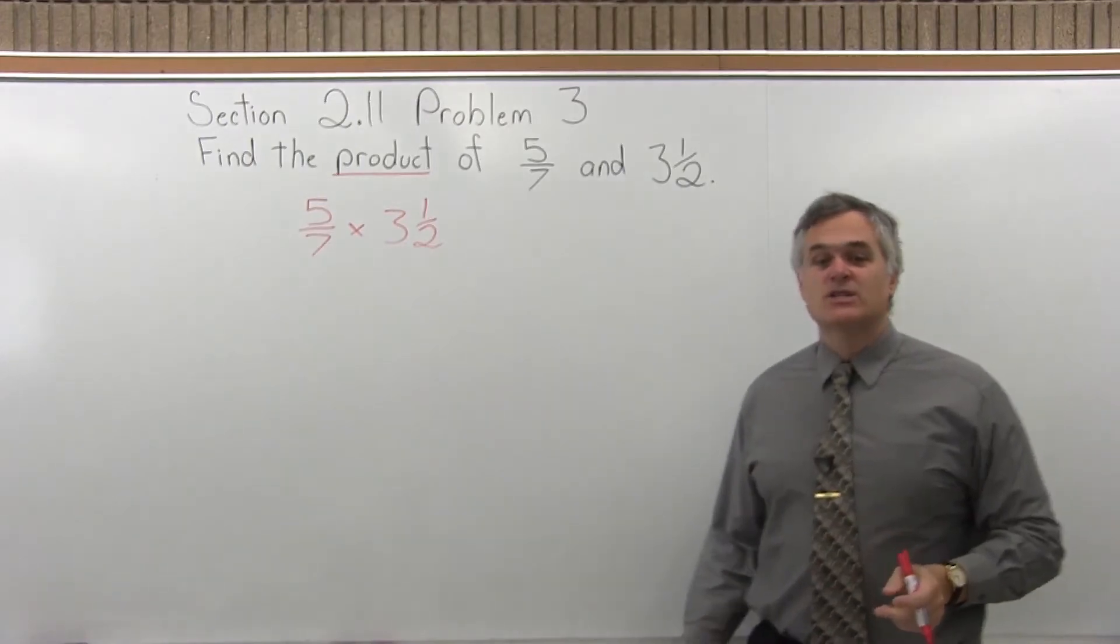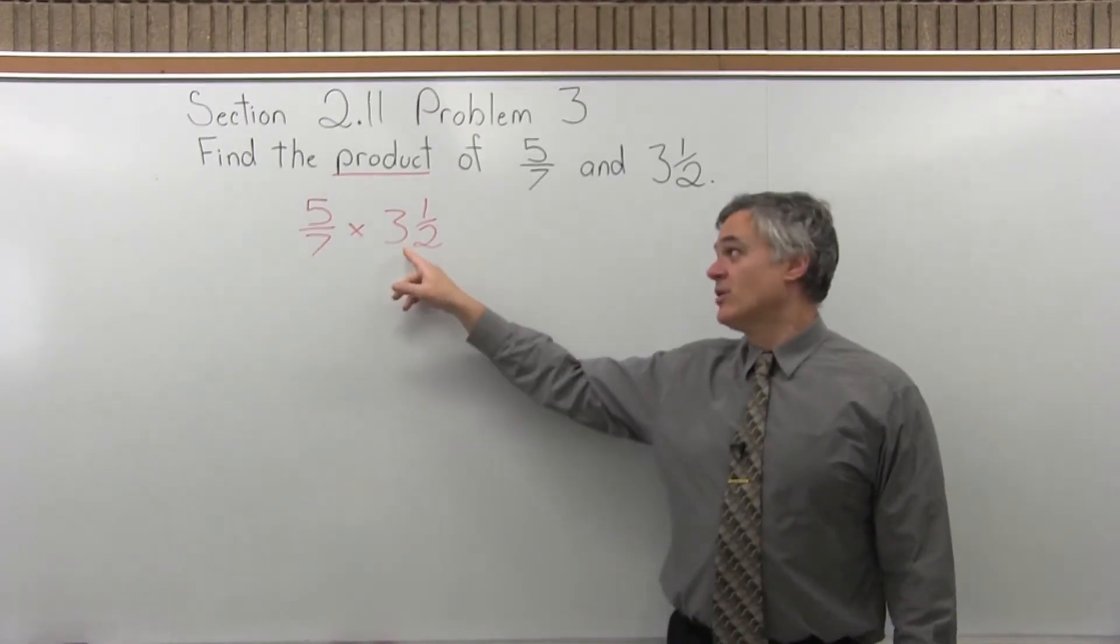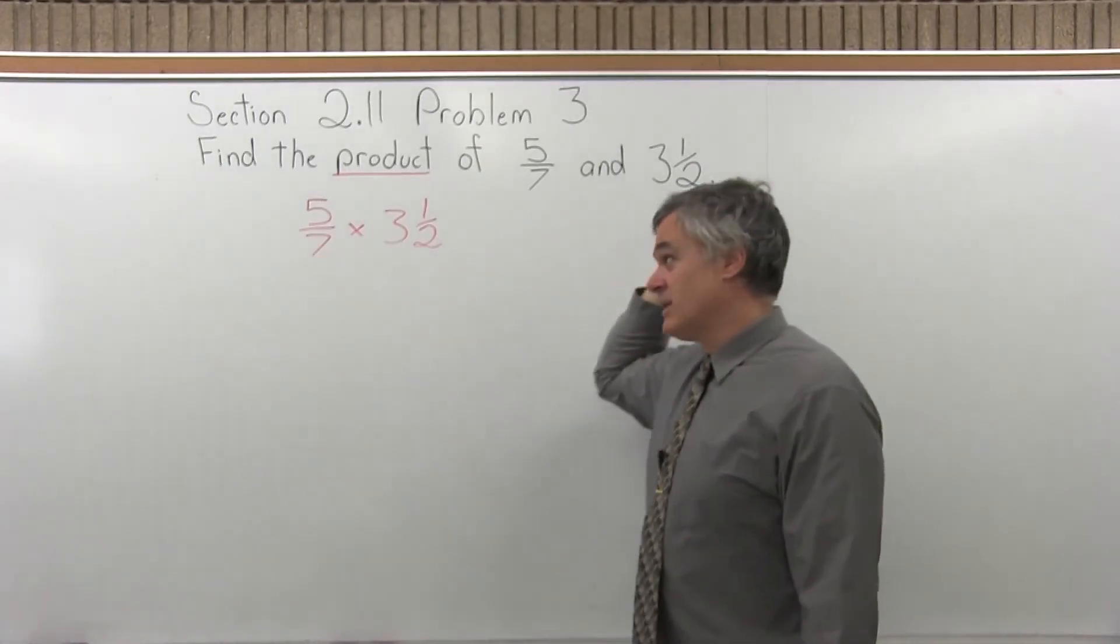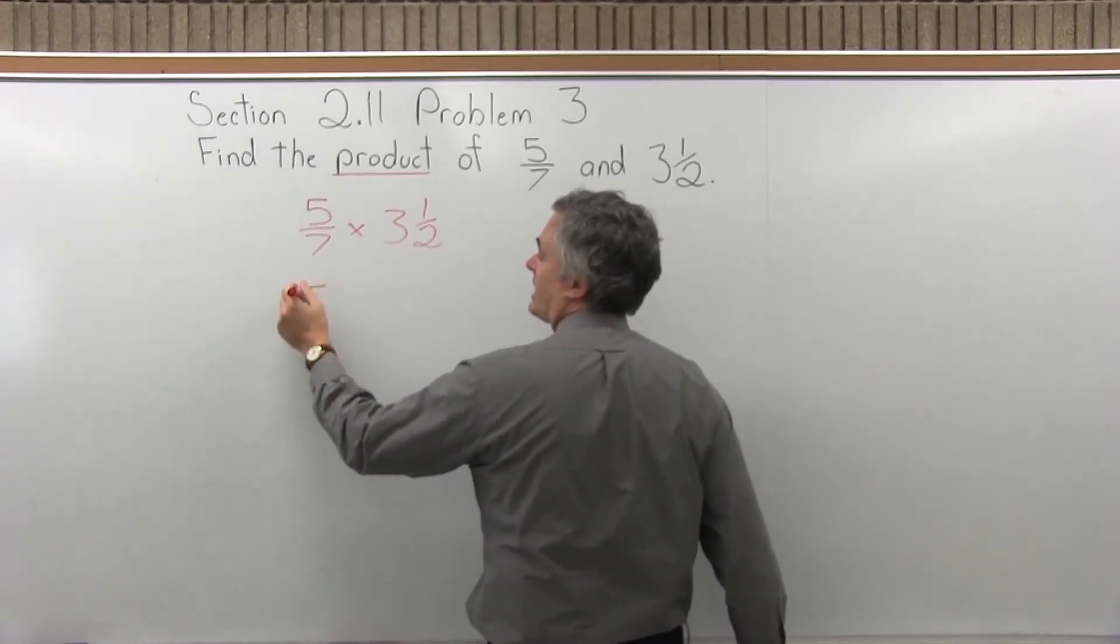Now in order to multiply fractions, both fractions have to be written with only a numerator and a denominator, no number. So for the first fraction, that's all set. We don't have to do anything. But the 3 and a half has to be converted to what we call an improper fraction.